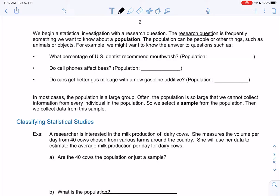And a research question is usually some sort of population that we want to know about. A population can be people or things. So when someone says, has a research question, what percent of U.S. dentists recommend mouthwash, the population is then all dentists. But it should make sense that we're probably not asking every single dentist when we answer this question.